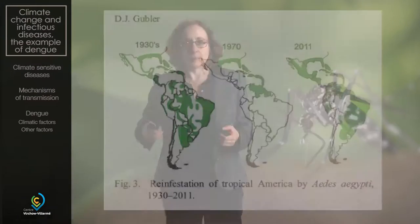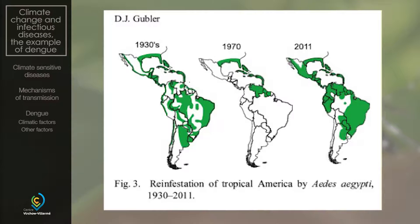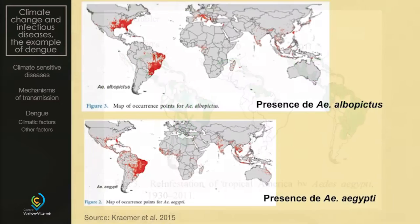If we look at the map provided by Professor Gubler, comparing where mosquitoes were spread in the 1930s and nowadays — in this case in South America — we see that in the 21st century we have reached again the level of the 1930s. So the vector itself is now very widespread worldwide. A map showing where the two species of mosquitoes are spread nowadays shows that they cover most of the tropics and subtropical areas of the world, putting about half of the world population at risk of dengue transmission.